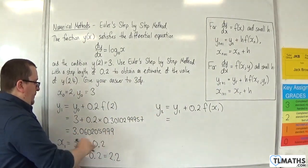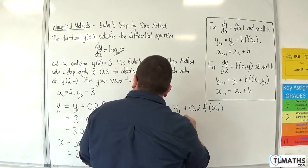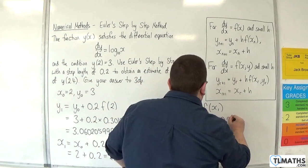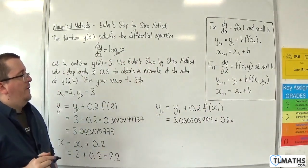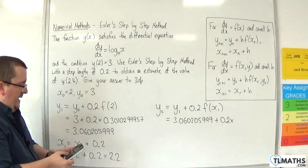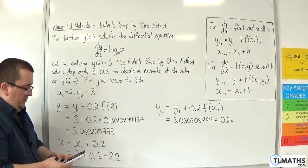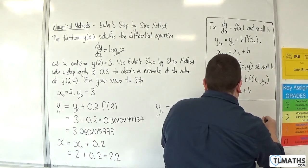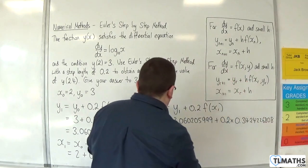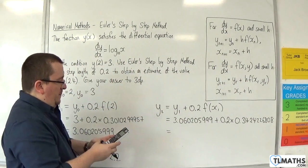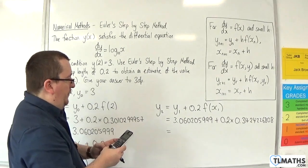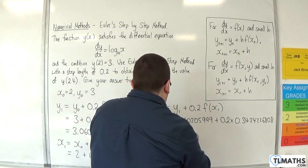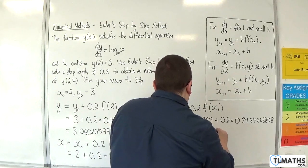Now y1 was this, so that is 3.060205999 plus 0.2 times by f of x1. So that would be log base 10 of x1, which was 2.2. So that is 0.3424226808. So times that by 0.2, then add on 3.060205999, and we get 3.128690535.